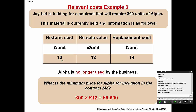We need to check the other two costs: the resale value of 12 pounds and the replacement cost of 14 pounds, because those are future costs. Since alpha is no longer used by the business, the relevant cost is the resale value of 12 pounds per unit. The replacement cost is irrelevant here. So how much will we get for this contract? We get 800 multiplied by 12, which equals 9,600 pounds. The relevant cost is the resale value.